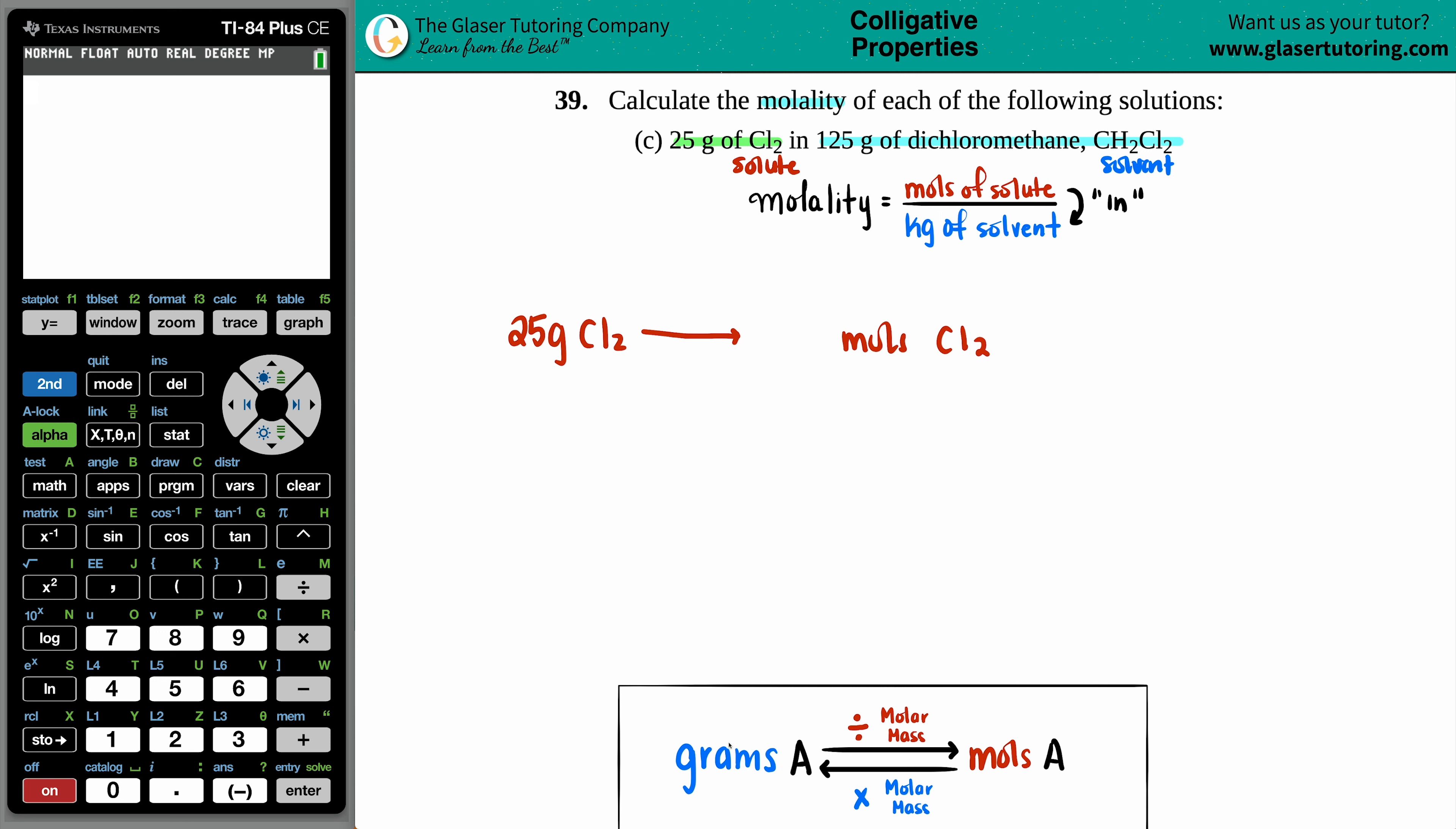Grams to moles, going all the way back to the beginning of chem. If you want to convert from grams to moles, all you have to do is just divide by the molar mass. So let's just find out the molar mass of Cl2.